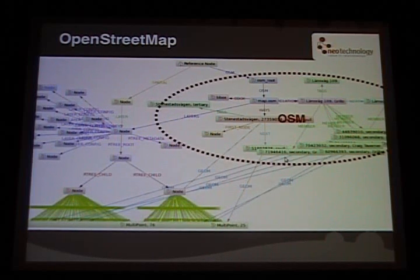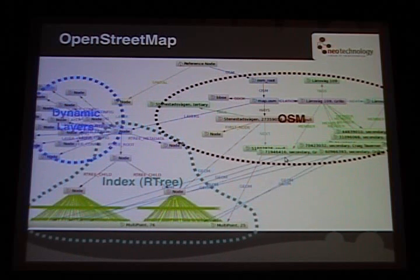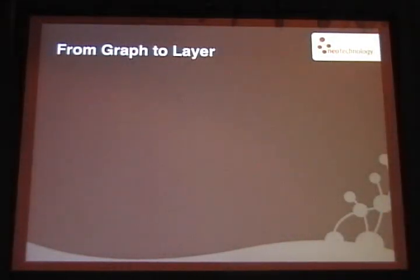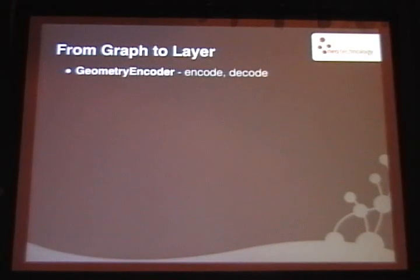We have the domain dataset, then a definition structure, then the indexing substructure — these are the basic graph components. So what are layers in Neo4j Spatial? Basically, there are no layers — we don't want layers. But still, we have to have them for compatibility.